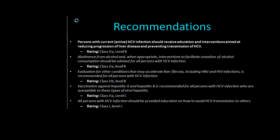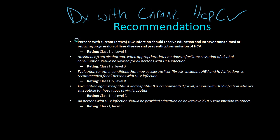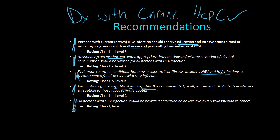Once someone has been diagnosed with chronic hepatitis C, there are some general recommendations. First, you must counsel the patient about the fact that they have it, that they can get liver disease, and that they shouldn't spread it to other people. Tell them to abstain from alcohol. Test them for hepatitis B and HIV, because concurrent infections can make their disease process much worse. If they haven't been vaccinated against hepatitis A and B, and presuming they don't have those infections, you should vaccinate them. And again, tell them how they can avoid transmitting HCV to someone else.